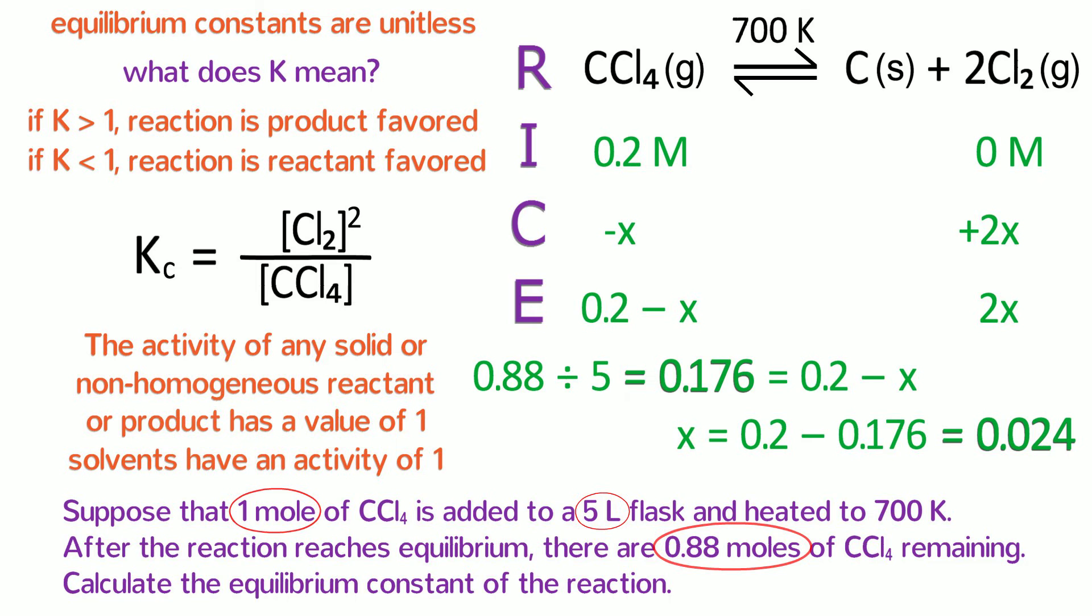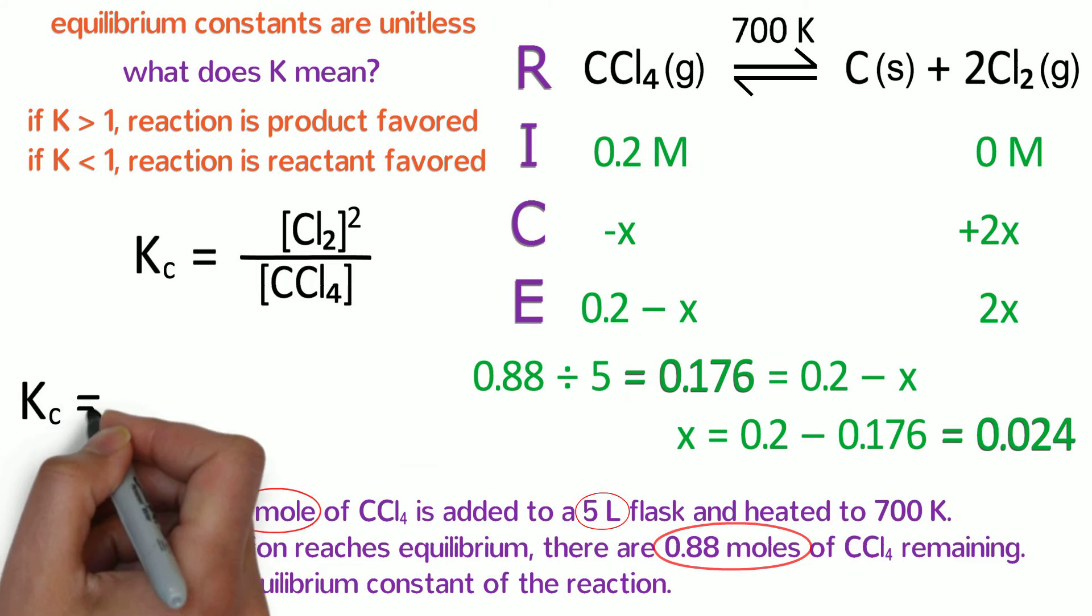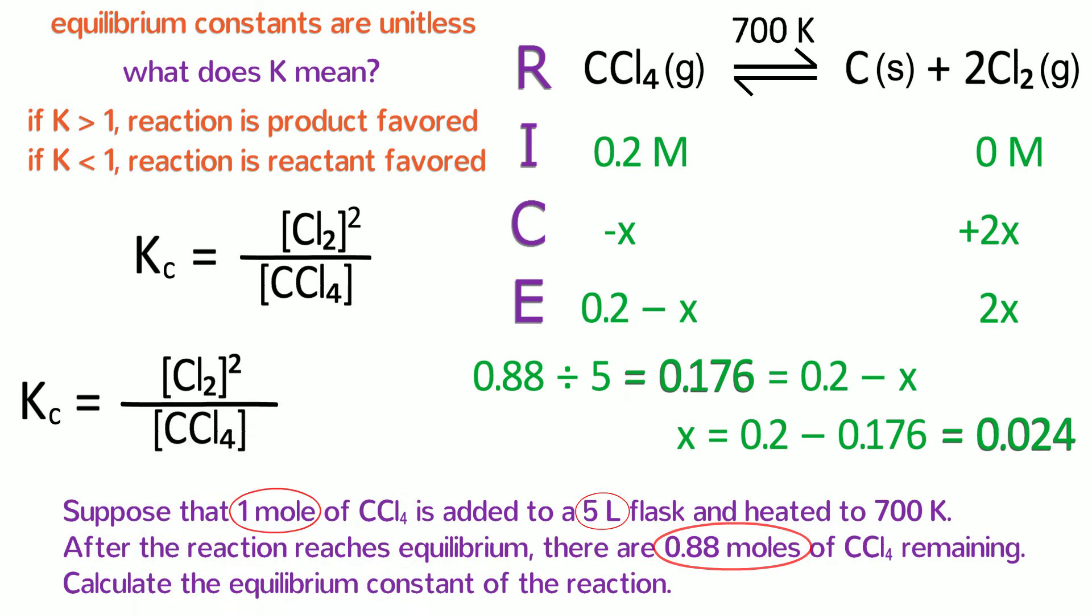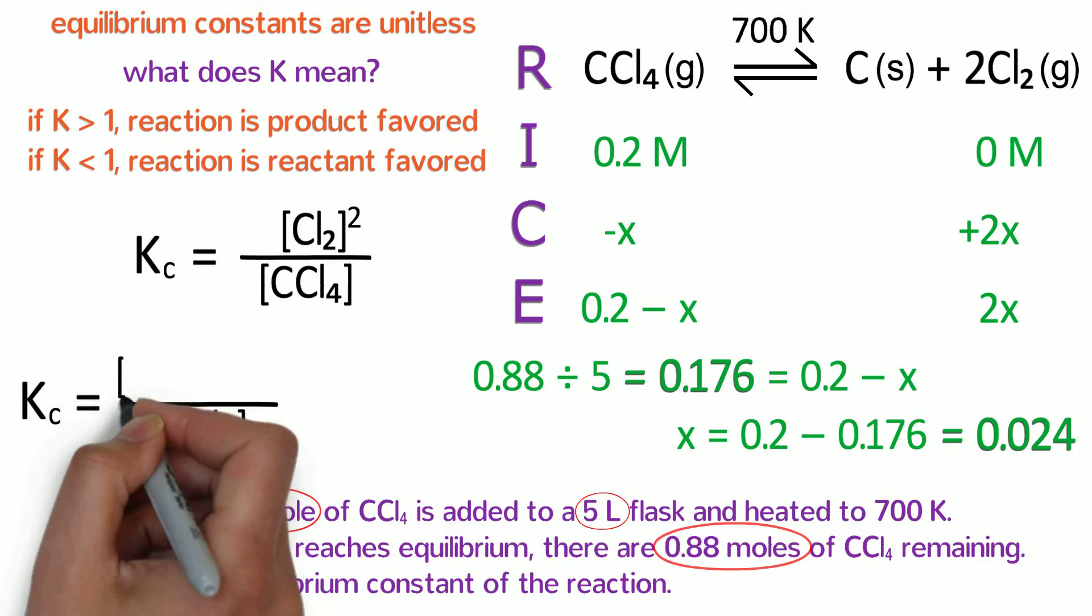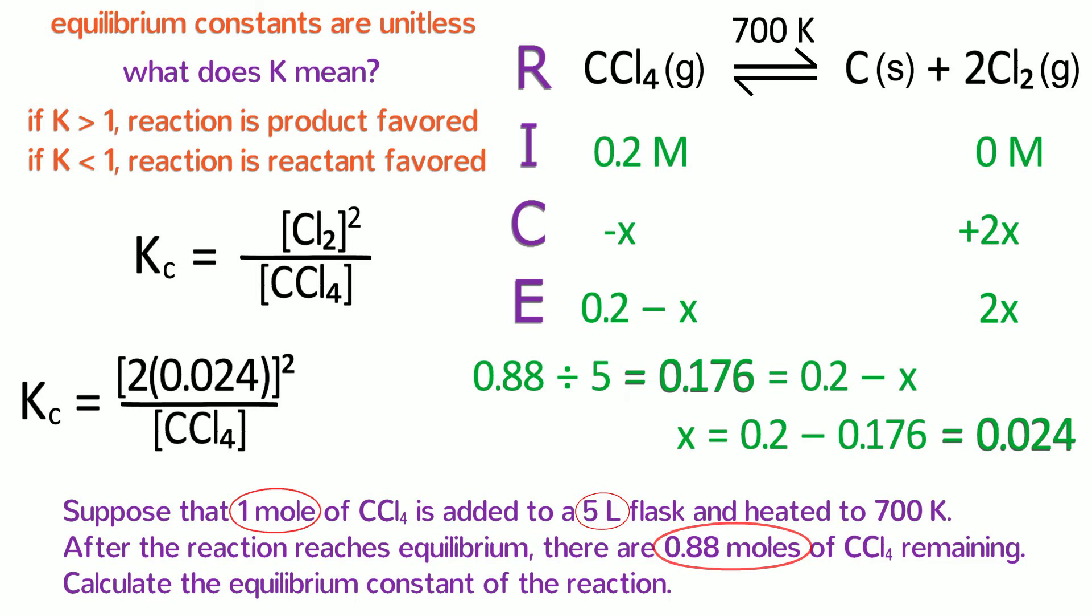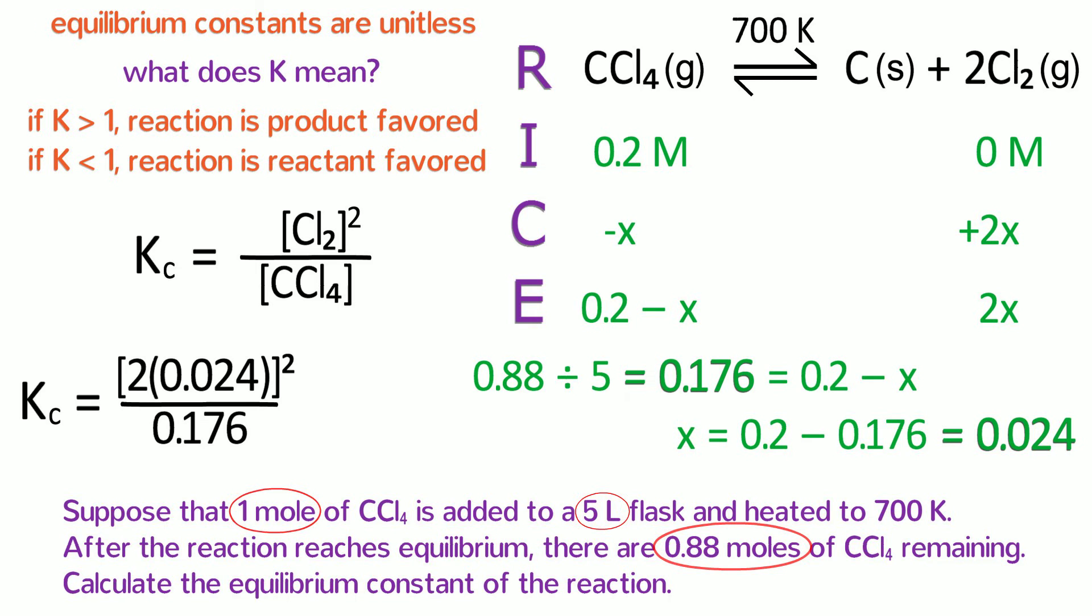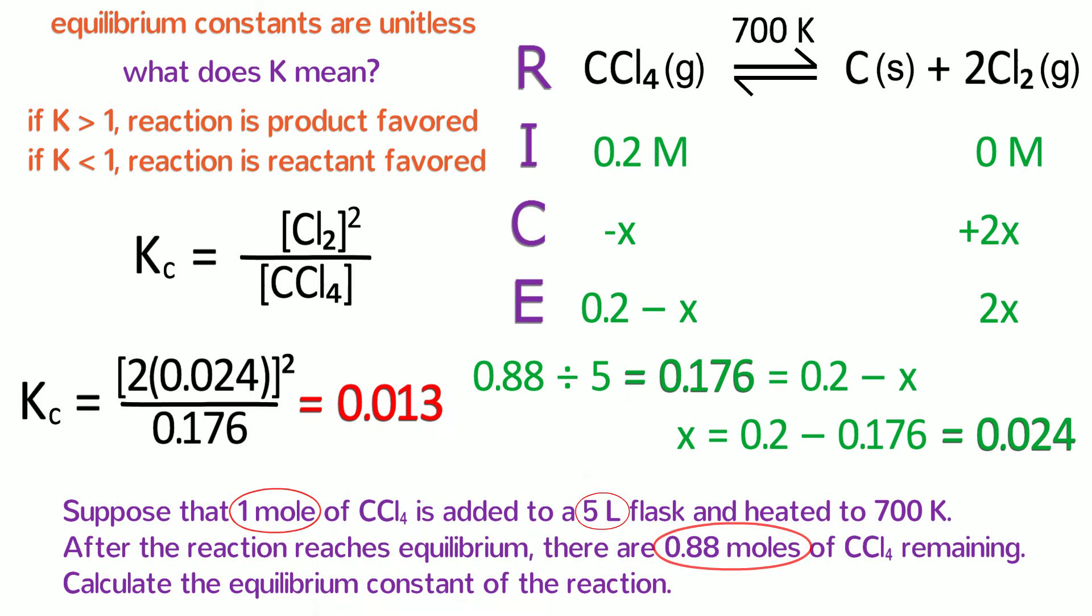Now, the only thing left is to plug in the numbers and calculate the equilibrium constant. Kc equals the equilibrium molarity of chlorine squared divided by the equilibrium molarity of carbon tetrachloride. The equilibrium molarity of chlorine is 2X, and we can substitute 0.024 in for X. We already calculated the equilibrium molarity of CCl4 to be 0.176. Plugging this into our calculator gives us an equilibrium constant of 0.013.